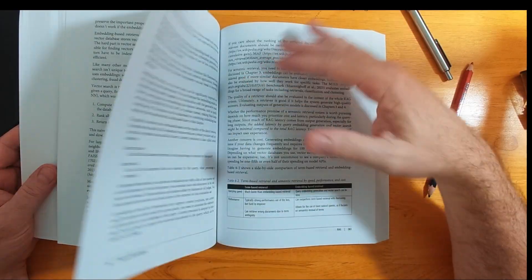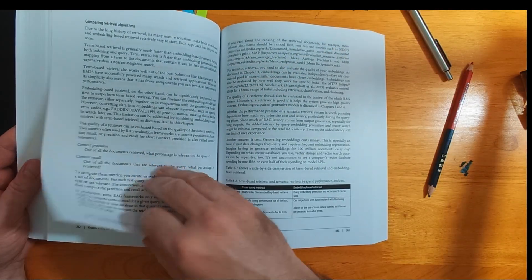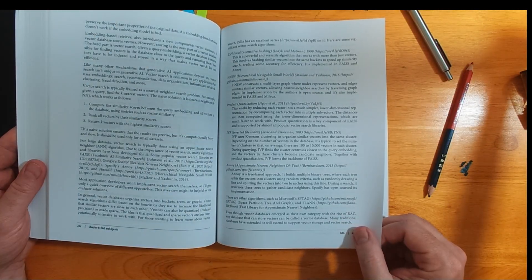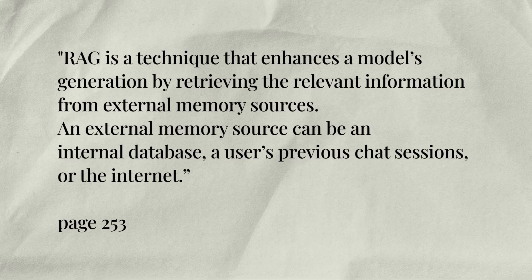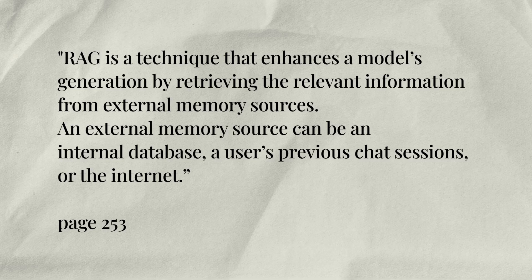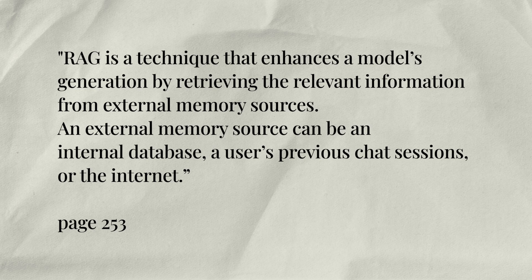Again, this book is to give you an introduction to these topics. RAG is a technique that enhances a model's generation by retrieving the relevant information from external memory sources. An external memory source can be an internal database, a user's previous chat sessions, or the internet.